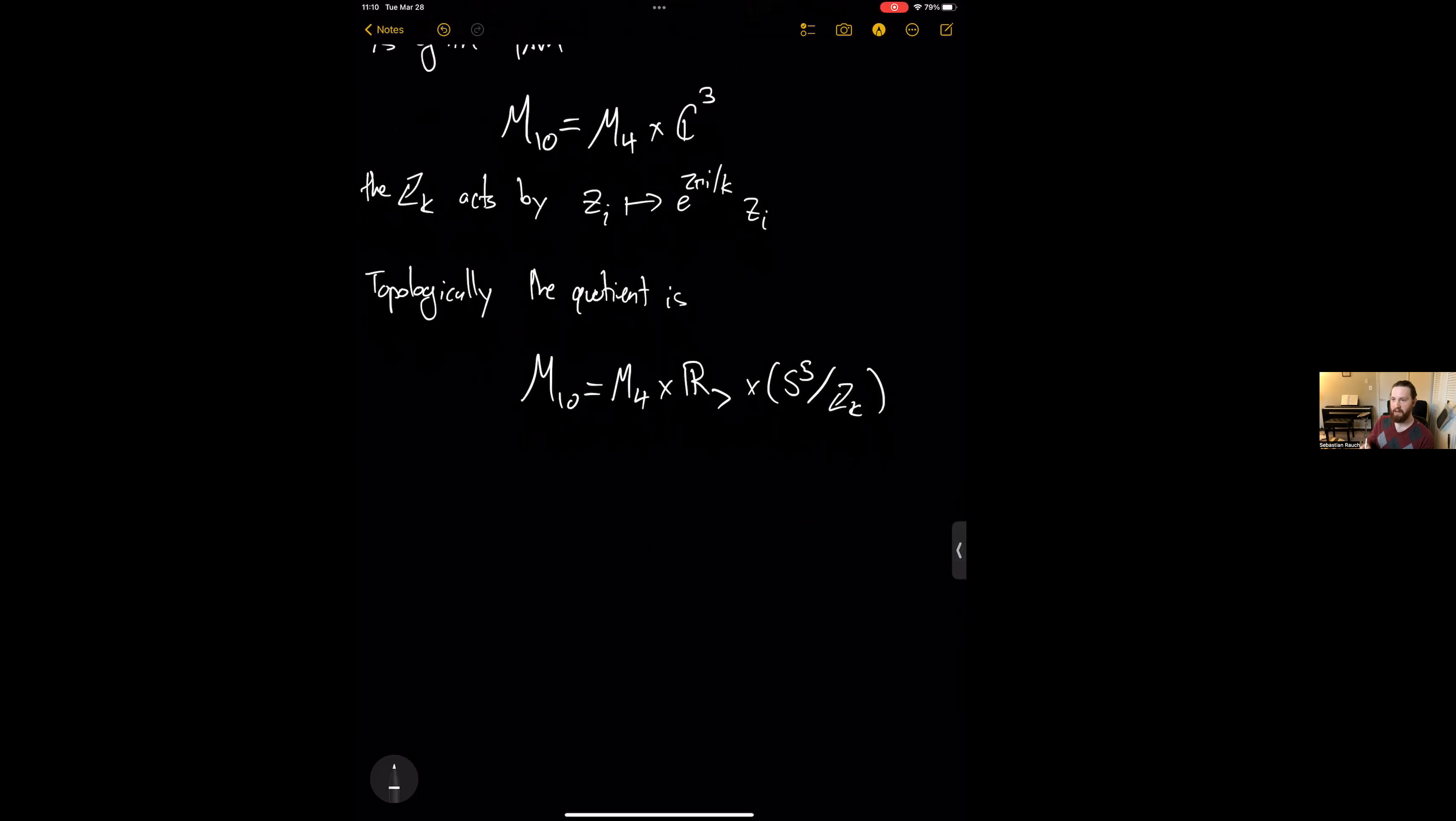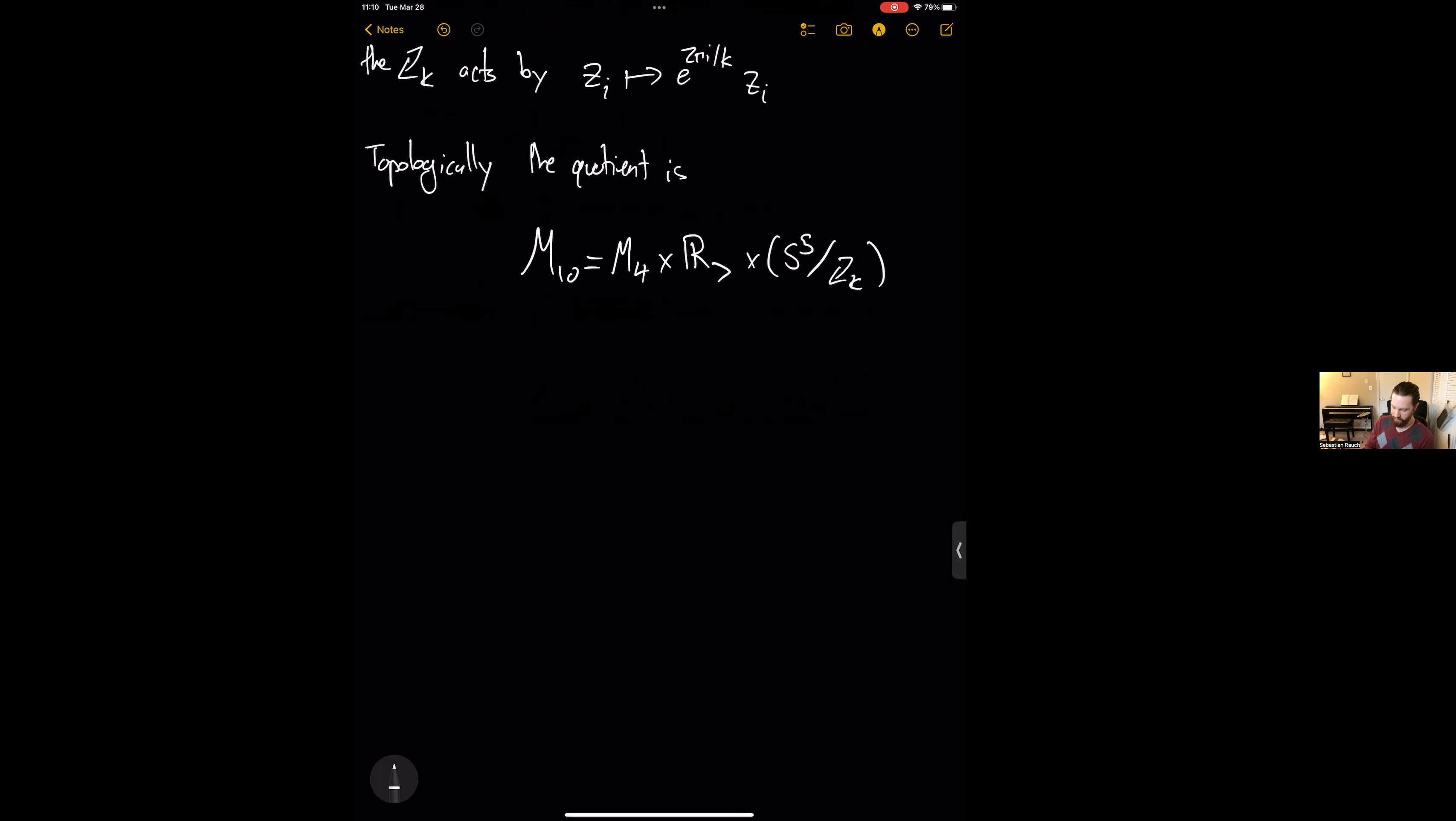Okay, so then additionally with this, we have this action of rho K on the F-theory torus. And so the idea is that when we carry a state around a cycle in this S5 mod ZK, we will act on the state by rho K. So the kind of cartoon picture here, if I, instead of having C3, I just have C. So I have the unit circle in C. Then I can consider what happens under, say, a Z3 quotient. So here I'm identifying points related by this 2 pi by 3 rotation. And as well, I have the complex structure tau for the torus, which is being mapped non-trivially by the action of rho K.